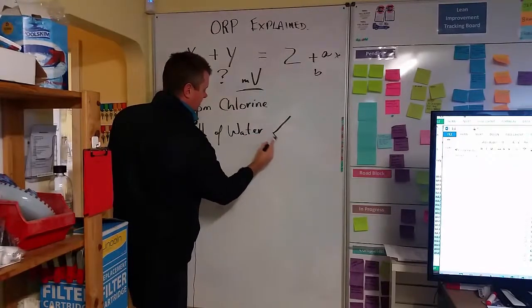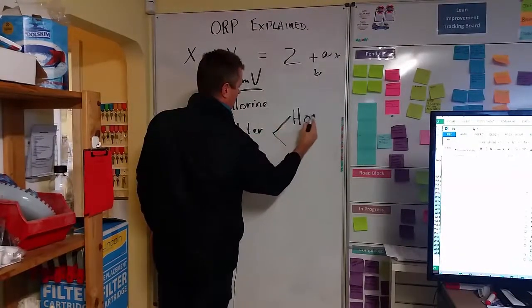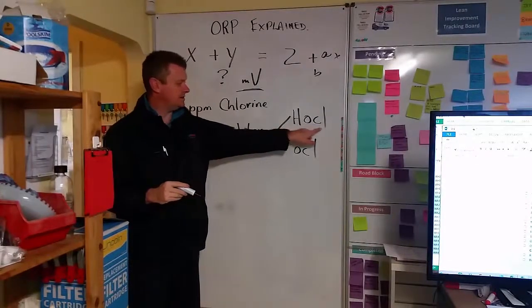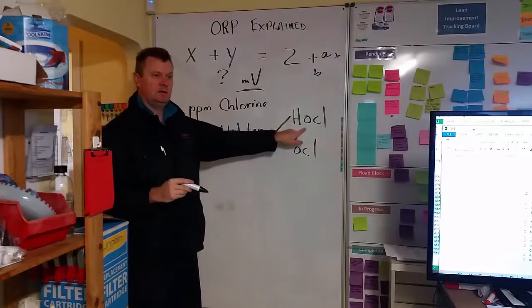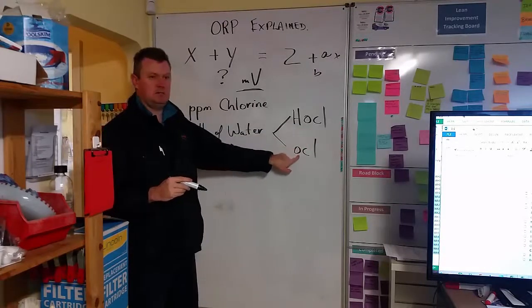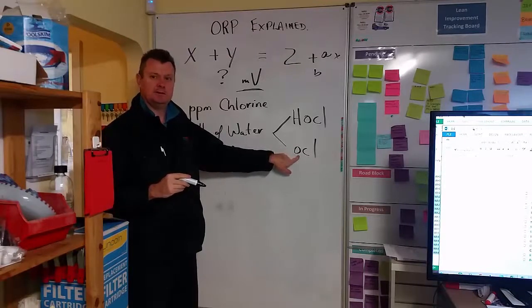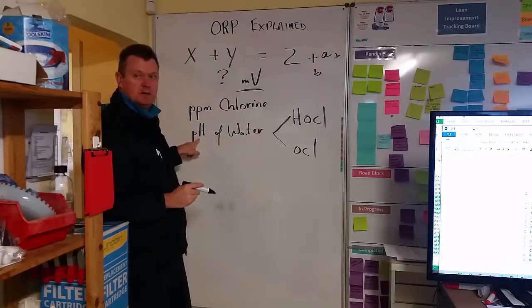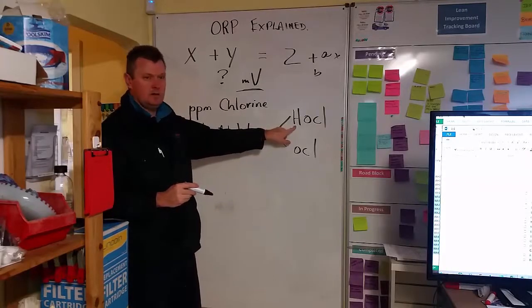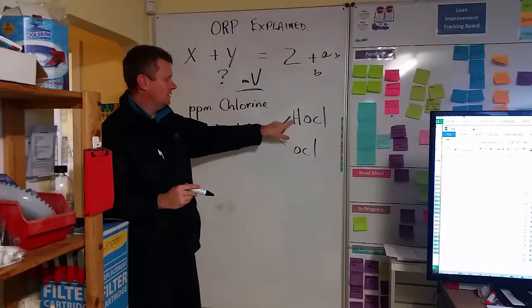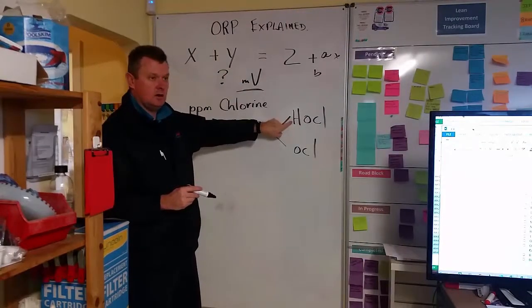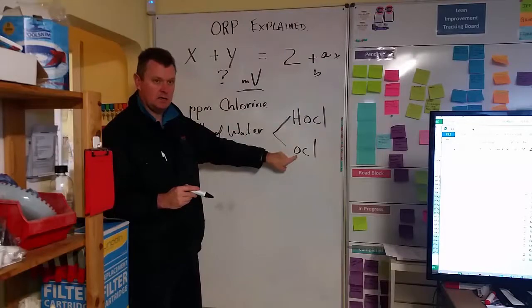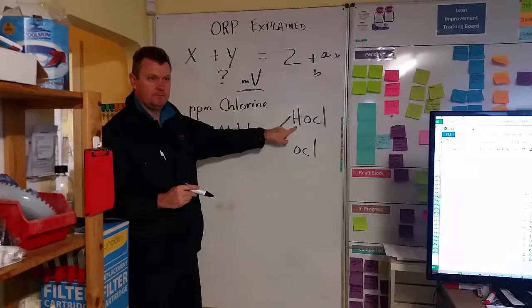pH dictates whether you're having HOCl or OCl-. So that's the one that is the well-trained army that's out there killing things. And that's the Swiss that love everybody and don't really do much. And funnily enough, pH means hydrogen potential. And that's the hydrogen ion, or hydrogen atom there. So as pH goes up, you've got less hydrogen in the water, hydrogen ions in the water, which means there's less available to marry up with that. So there's less killing power in the water.